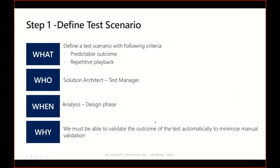Step one is to define a test scenario. We need to have a test where we can predict the outcome, and we must be able to play it back repetitively, verifying each time that the scenario is still running as expected. Typically the person doing this should be a solution architect or, in larger implementations, a dedicated test manager — someone with a holistic view. Those test scenarios might span different areas, and you should start defining them during your analysis and design phase as an integral part of your implementation.